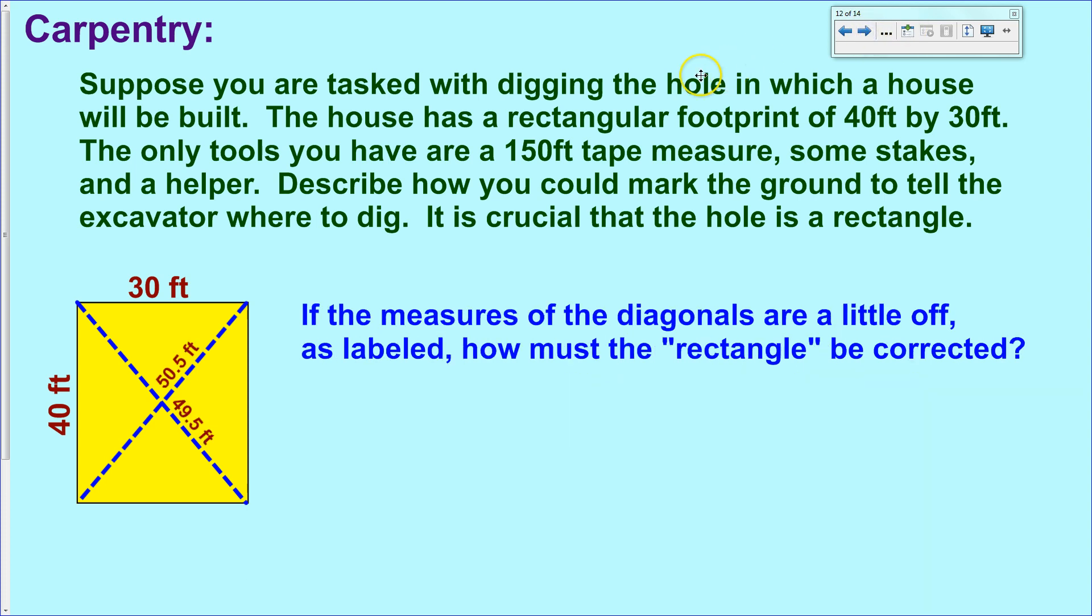But let's say they weren't. Let's say you did all that work, and you measured the diagonals between your stakes, and you got that this diagonal was 50 and a half feet, and this diagonal was 49 and a half feet. Pause the video and think about how you would fix that.